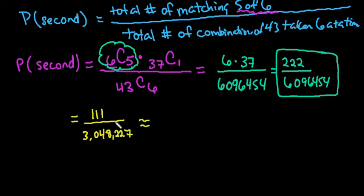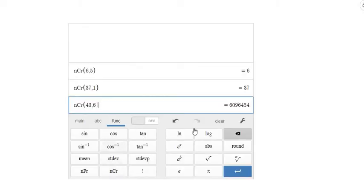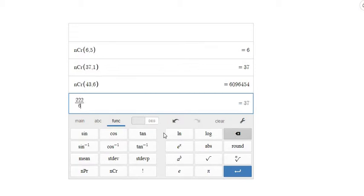Or I could put this to a decimal. Some calculators may give you an E. This calculator, if I plug it in, let me just go back here, we'll see what it does. If I take and plug in the 222 divided by 6,096,454, notice that it gives it to me in scientific notation.